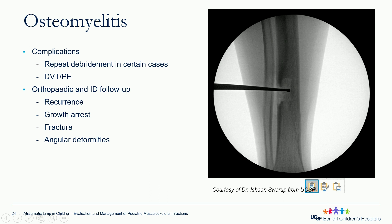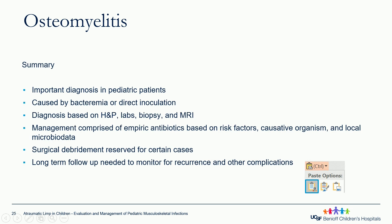Complications for osteomyelitis include need for repeat debridement, DVT and pulmonary embolism — especially for older patients or with MRSA or high-virulence organisms. Orthopedic and infectious disease specialist follow-up is important. Recurrence is a problem. Growth arrest can occur, particularly around the physis. Pathological fractures are also a concern — particularly if more than a portion of the cortex is involved, pathological fracture and angular deformities can occur.